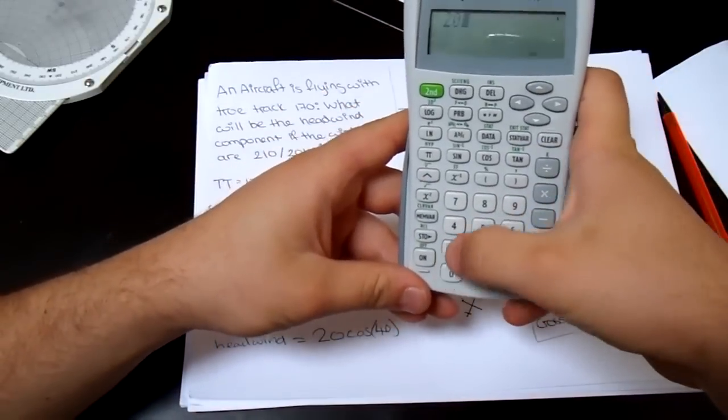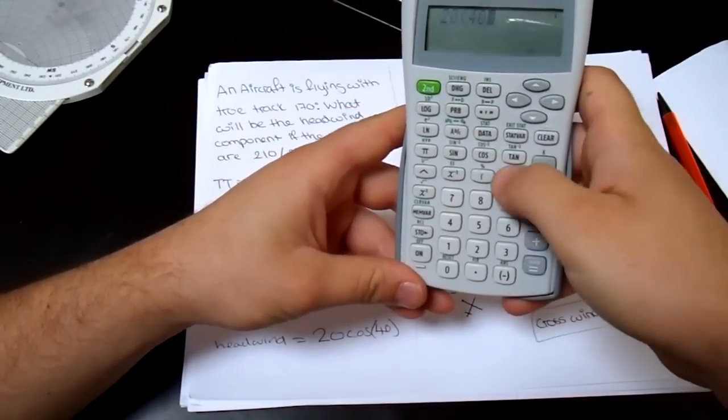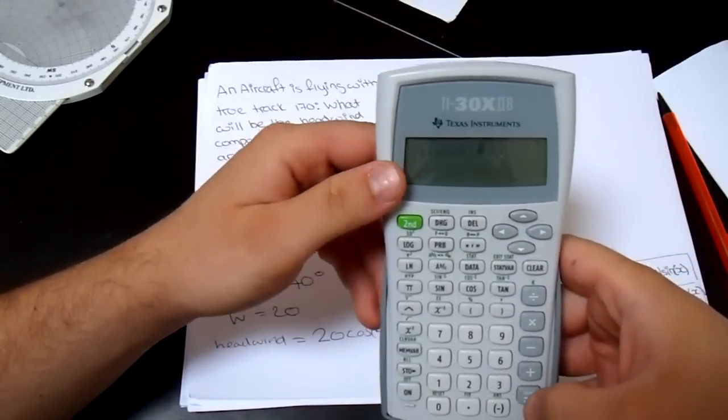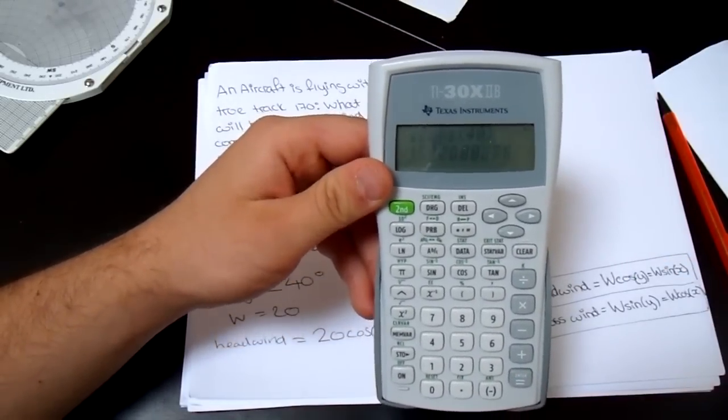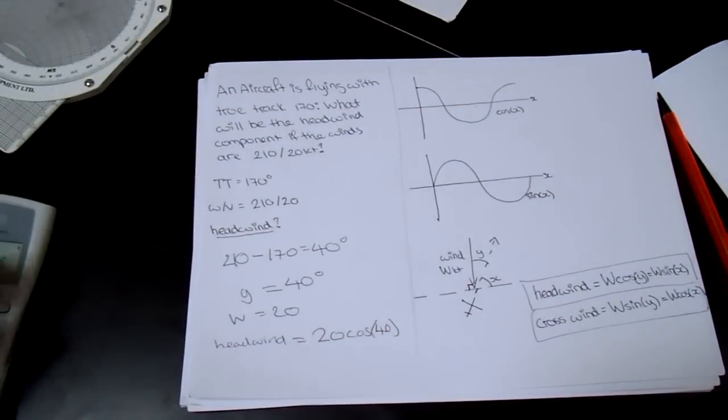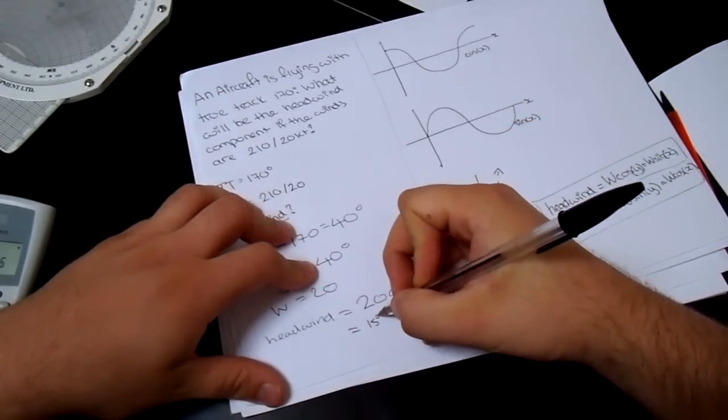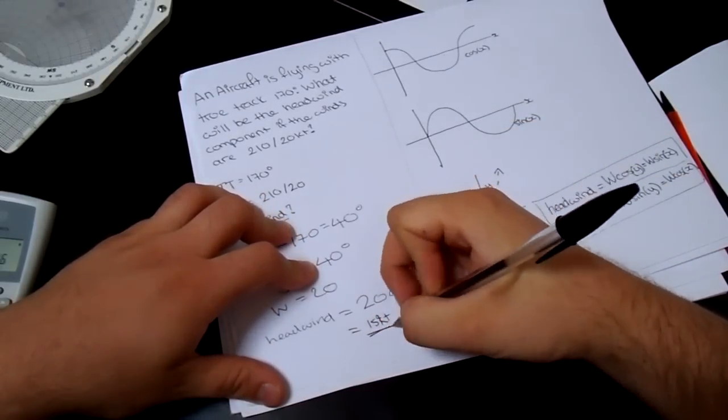We take our trusting calculator right here, we say 20 cos 40. There's no cos there. Cos 40. Bam. And we end up with 15 knots wind. And that will be the headwind.